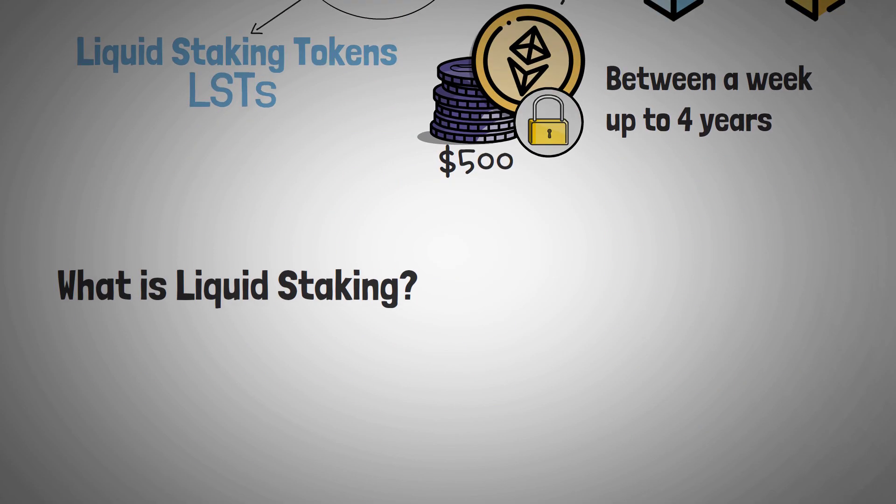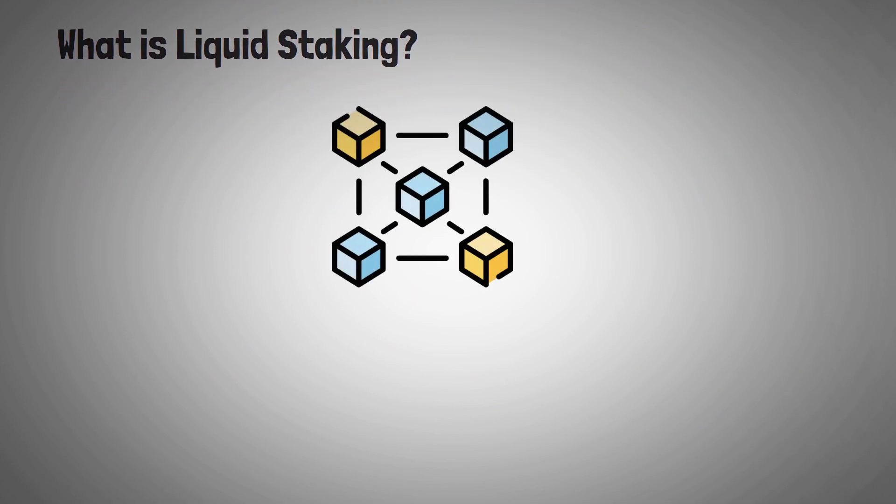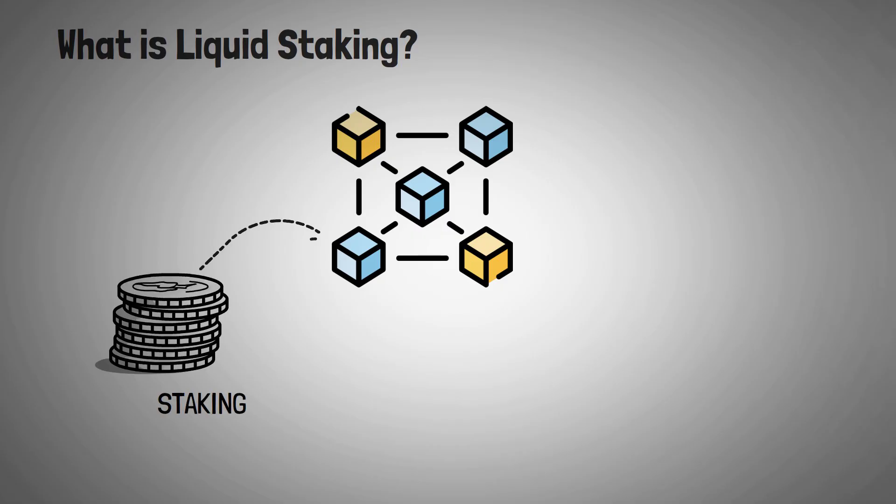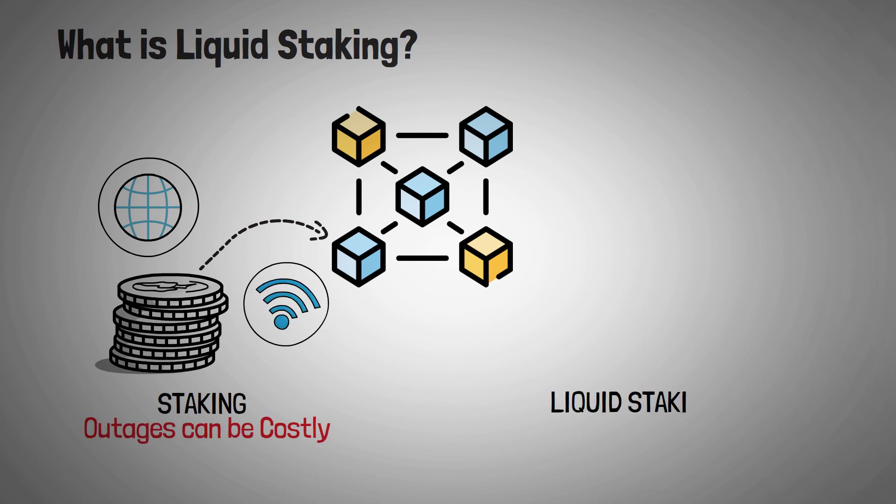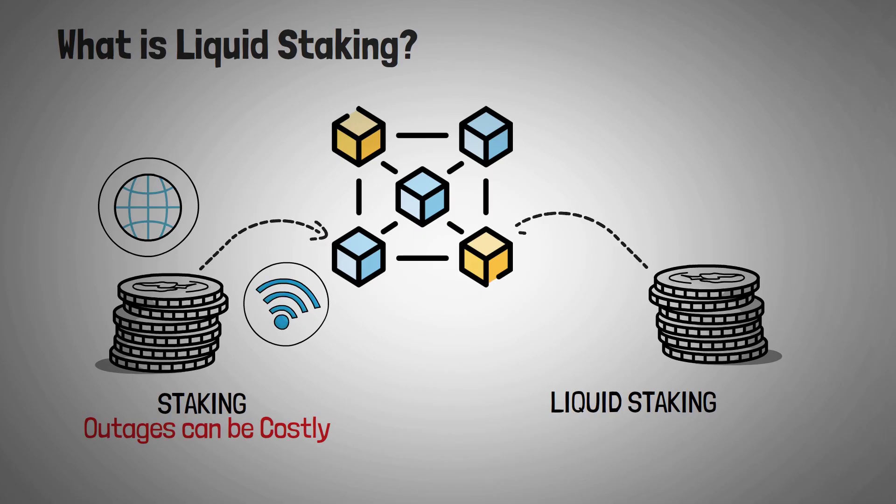Another benefit of liquid staking, other than the immediate liquidity, is that you don't have to run your own complex hardware. When you stake, you usually need a dedicated server and internet connection, and outages can be costly. When liquid staking, you do not have this risk. You are offering it to someone else who has the equipment to be sure there won't be outages. For most liquid staking tokens, you just need to hold the token itself to earn rewards. No technical expertise required.